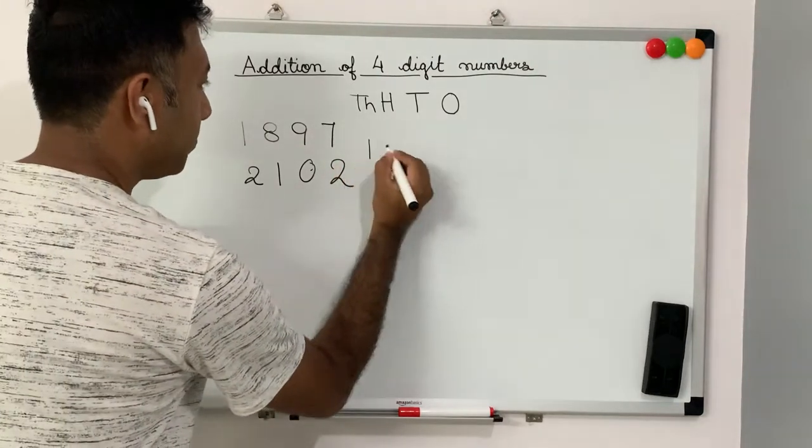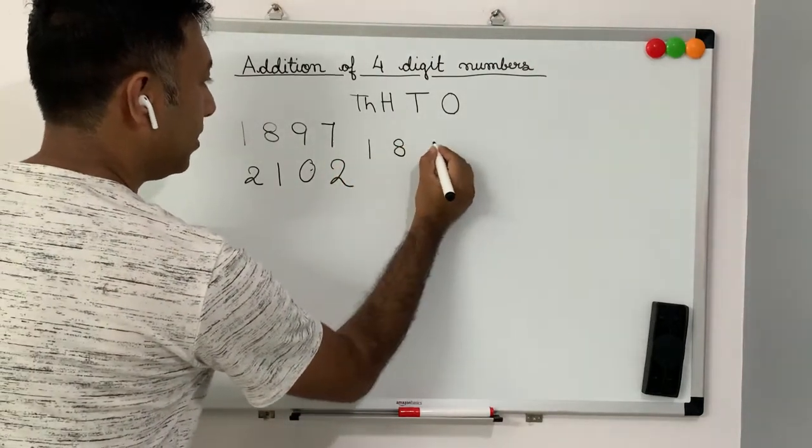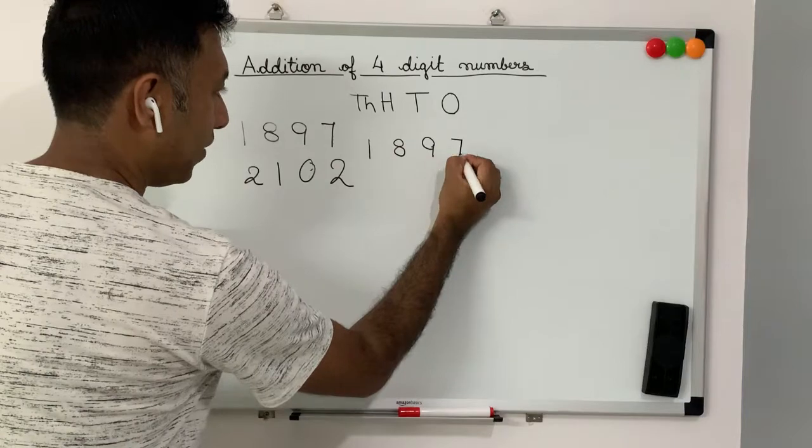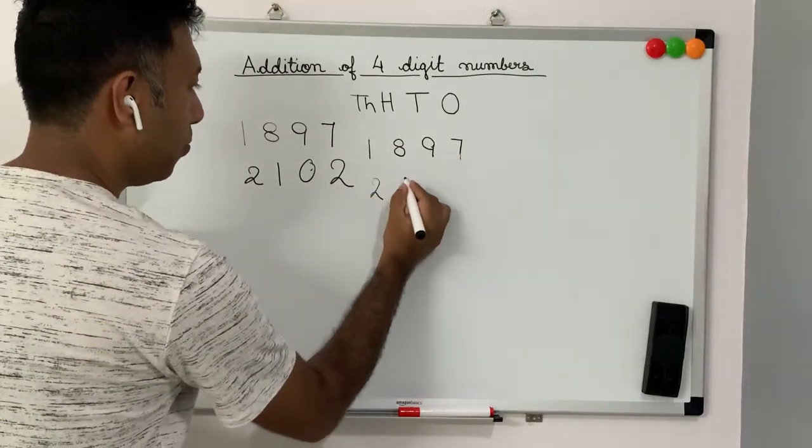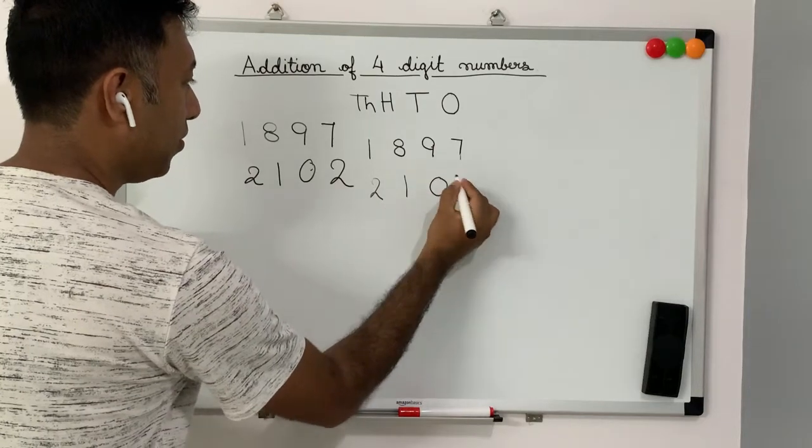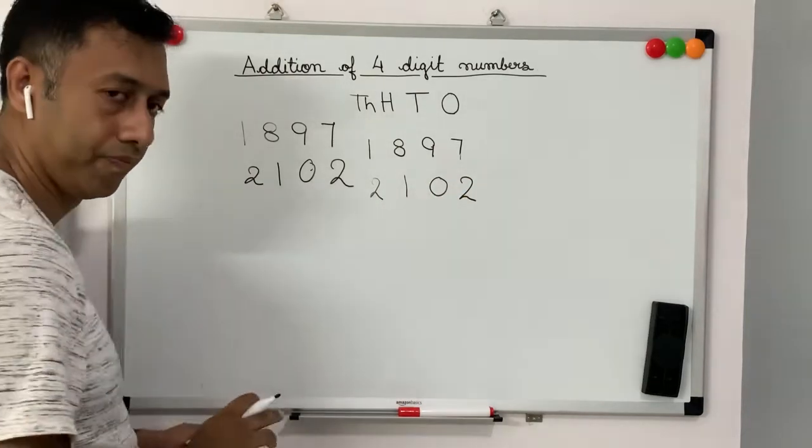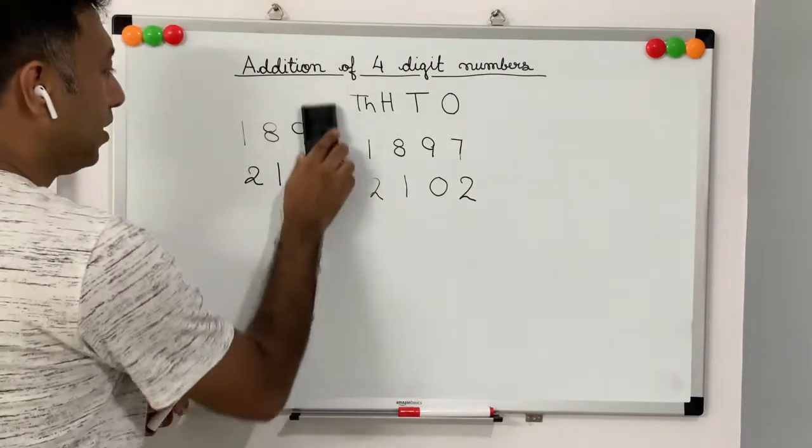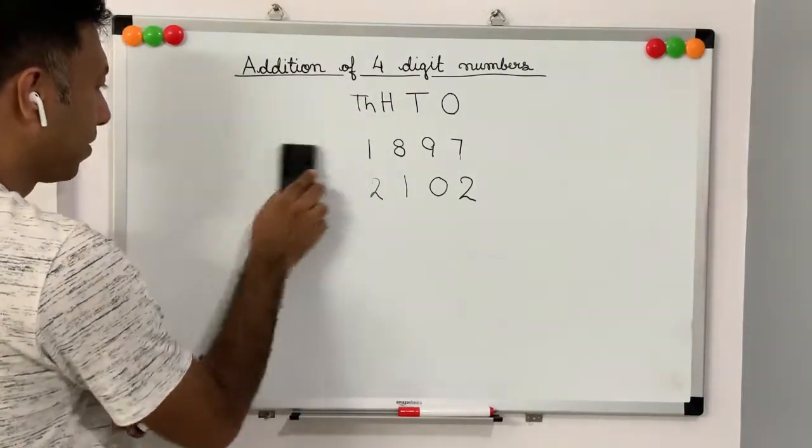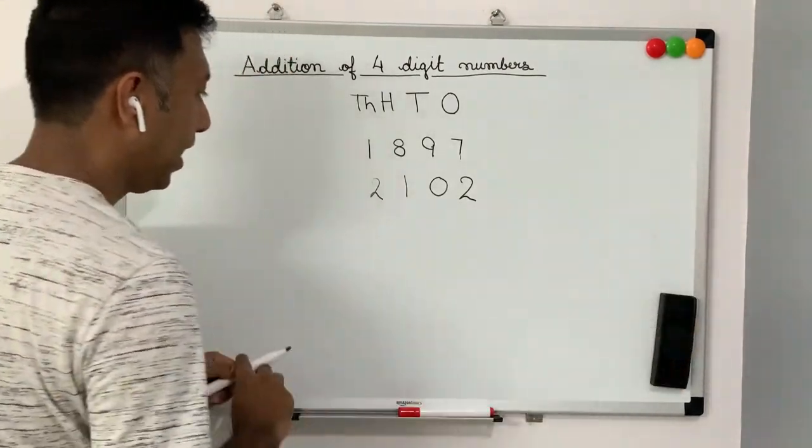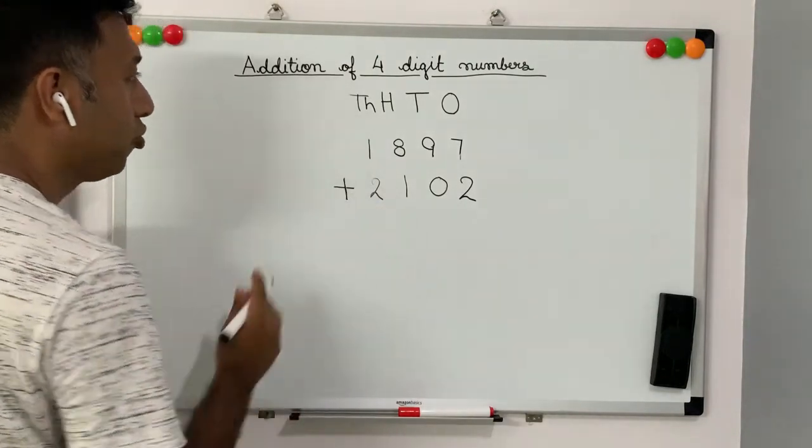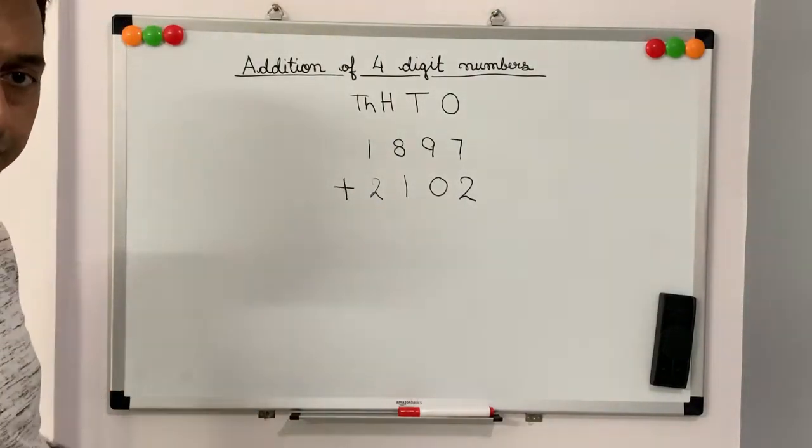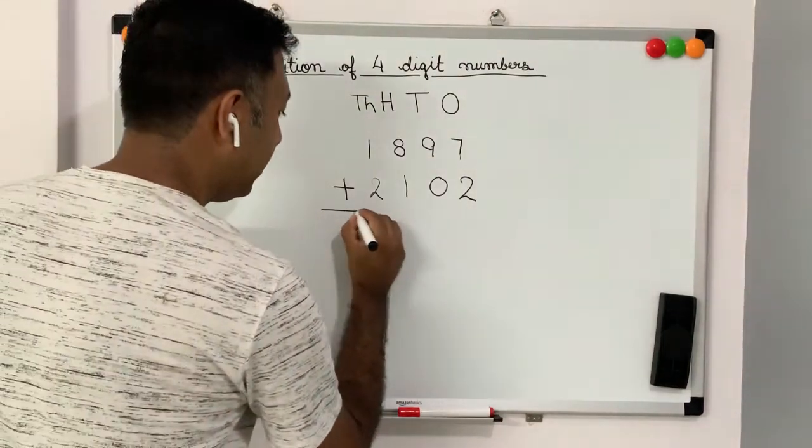So, 1, 8, 9, 7 and 2, 1, 0, 2. Let me erase this out. And we need to put a plus symbol because we are doing additions. Now, let's add these two numbers.